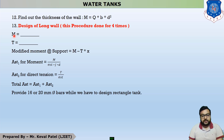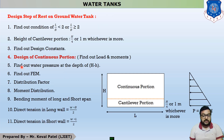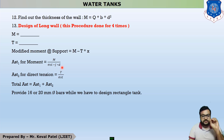We find the moments and direct tension T. First, find the modified moment at support or span using the equation M − T × X. Then find two AST values: one for moments and one for direct tension, calculated in steps 10 and 11. The equation for AST1 is: AST1 = M / (σ_st × J × D).